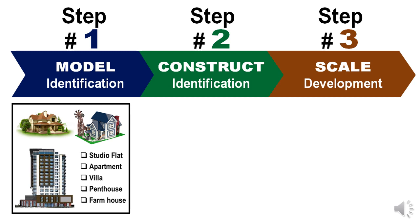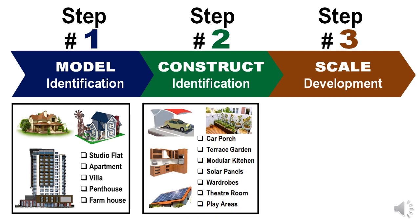Suppose I am planning to move into a new residential apartment. As far as models go, I have the option of a very small studio flat, an apartment, a standalone villa, a penthouse, a condominium apartment, a farmhouse, etc. For each of these, depending upon the choice of model, I have multiple constructs that complete that model — a car porch, a terrace garden, a modular kitchen, solar panels, wardrobes, theatre rooms, play areas and more.